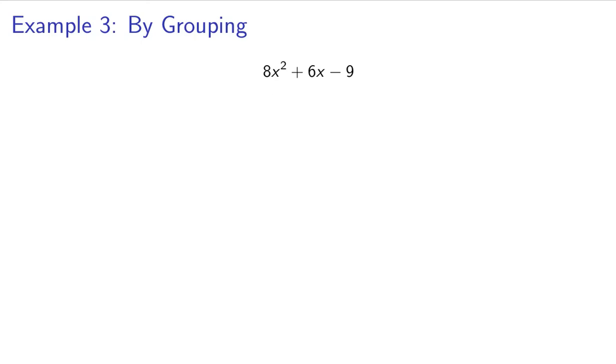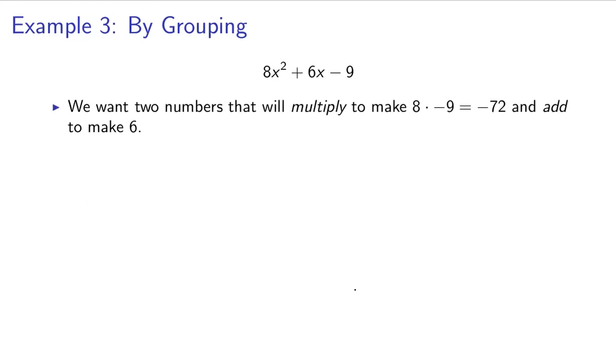You'll want two numbers that will multiply to make 8 times negative 9 equals negative 72 and add to make 6. This 8 times 9 equals 72, we want two numbers that multiply to make the product...